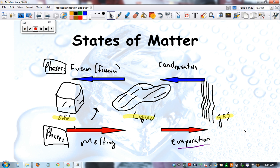And there are phase changes. The first one, melting, is a solid to a liquid. Evaporation is liquid to a gas. Condensation is gas to a liquid. And freezing or fusion is liquid back to a solid.